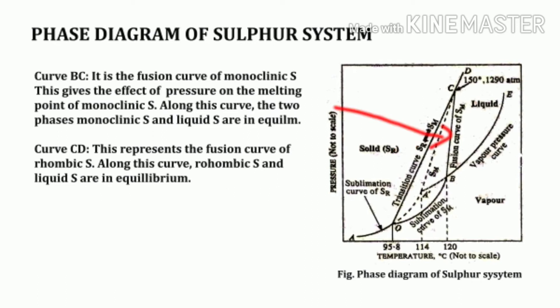Curve OC represents the equilibrium between rhombic sulfur and monoclinic sulfur. The curve BC is called the fusion curve of monoclinic sulfur, showing the effect of pressure on the melting point of monoclinic sulfur; along it, monoclinic sulfur and liquid sulfur are in equilibrium. The curve CD represents the fusion curve of rhombic sulfur, along which rhombic sulfur and liquid sulfur are in equilibrium. In addition to stable equilibria, there are also metastable equilibria indicated by the dotted lines in the figure.